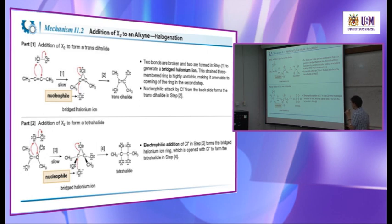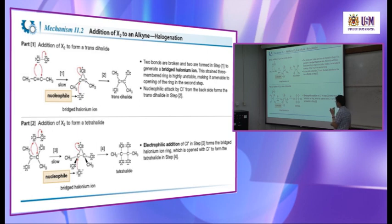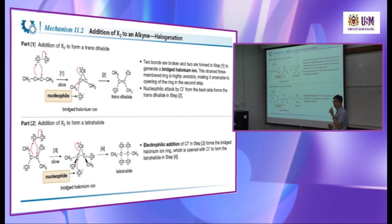Then chloride attacks again to yield the tetrahalide. So the end result is addition of two moles of halogen into the alkyne, producing a tetrahalide overall. This is exactly the same mechanism as what you have studied before, just applied twice.